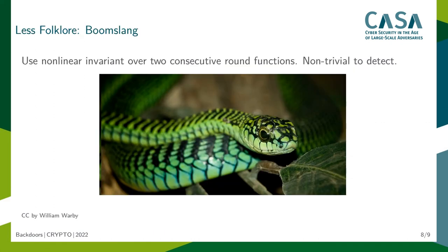We also have a different version of this idea, which we coined Boomslang. This is more involved — it uses a nonlinear invariant over two consecutive rounds, and I think it is highly non-trivial to detect in the sense that currently there are no tools to detect this weakness automatically. Please have a look at the paper; I think it's an interesting construction.